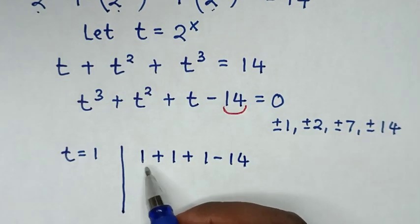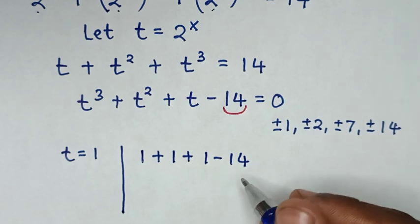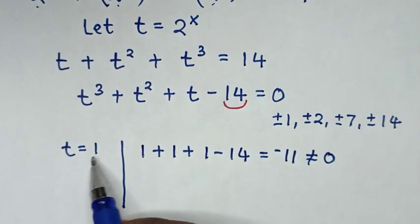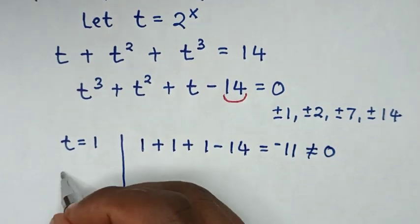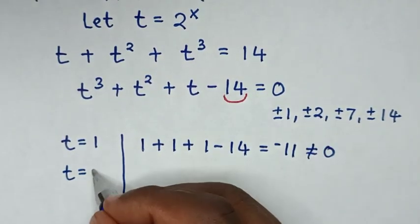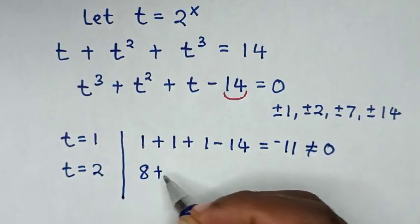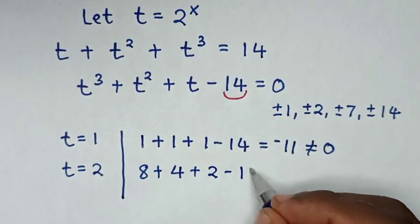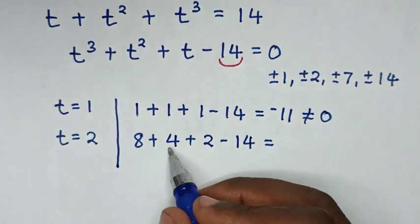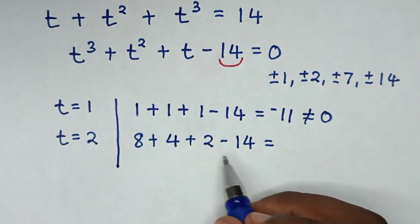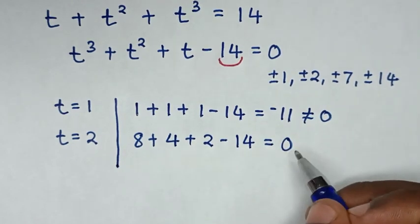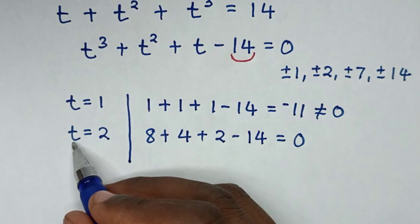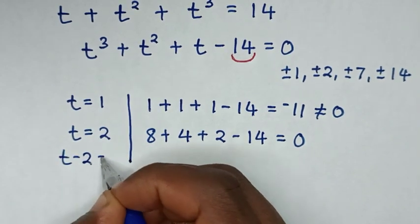then minus 14. Is it equal to 0? We know that 1 plus 1 plus 1 minus 14 gives 3 minus 14, which is not 0. So t equal to 1 does not work. Next we test t equal to 2: 8 plus 4 is 12, 12 plus 2 is 14, and 14 minus 14 is 0. So 0 equals 0, meaning the value t equal to 2 satisfies our equation. Then we take 2 to the left side, so t minus 2 equals 0.